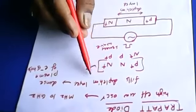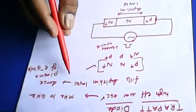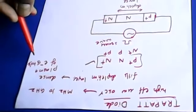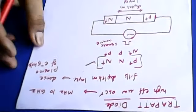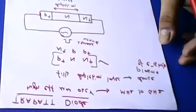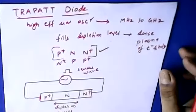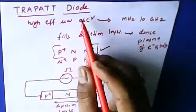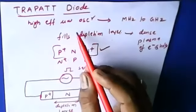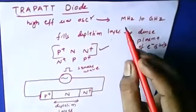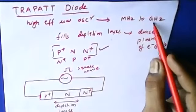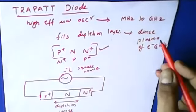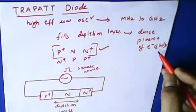The depletion layer of this TRAPATT diode is filled with a dense plasma of electrons and holes. It can be operated from megahertz to gigahertz, and the depletion layer is filled with enough dense plasma of electrons and holes.